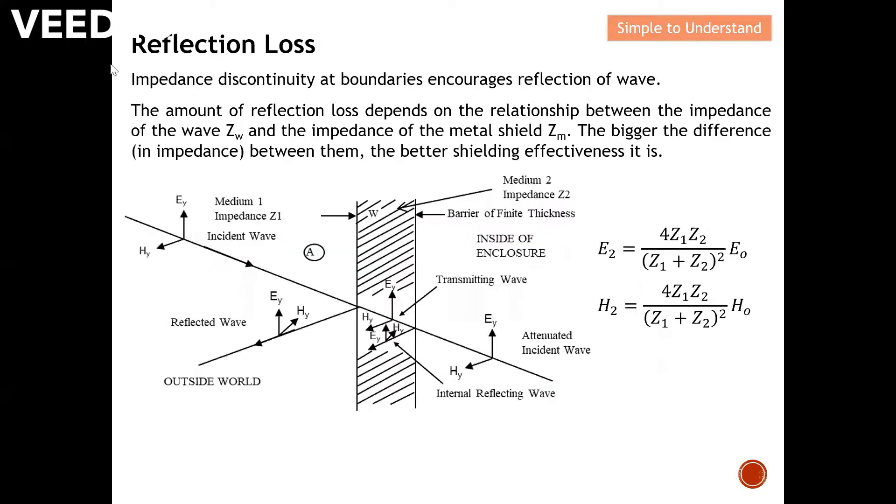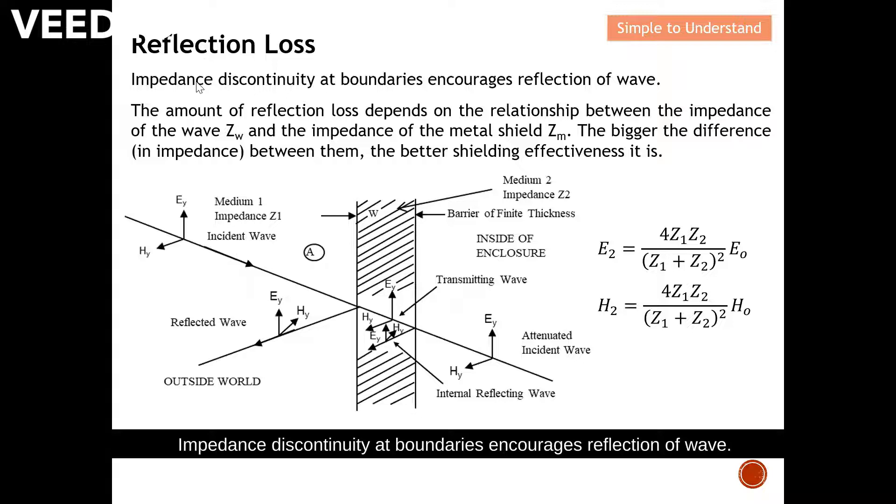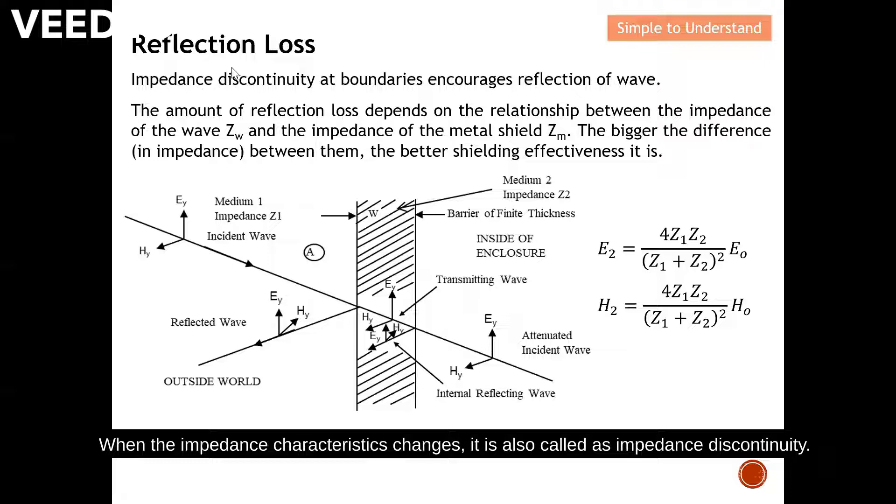So, what is refraction loss? Impedance discontinuity at boundary encourages refraction of wave. What does this sentence mean? For example, a field actually propagates along the air, which has an impedance characteristic of 377 ohm. When they actually hit a shield, the impedance characteristics actually change. When the impedance characteristics change, it is also called impedance discontinuity. When impedance discontinuity occurs, it actually encourages refraction of wave.